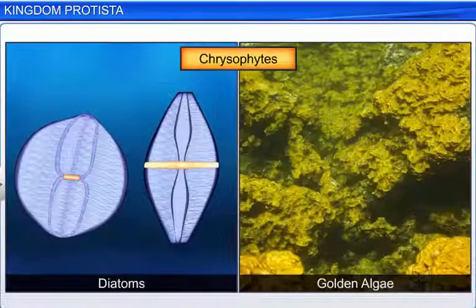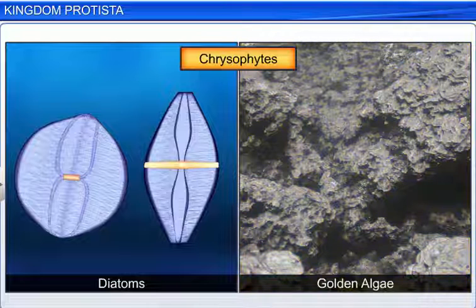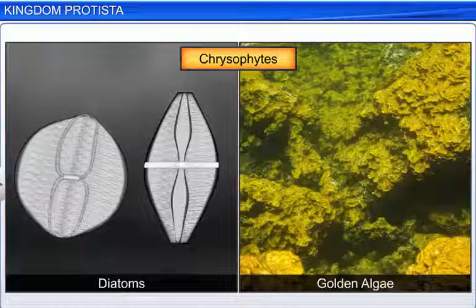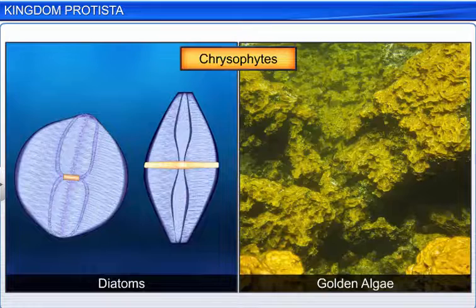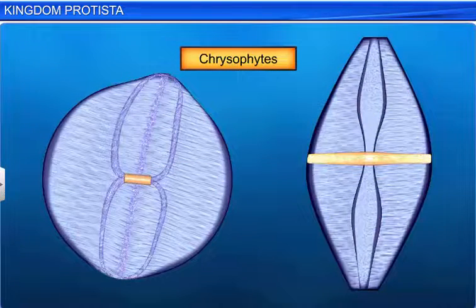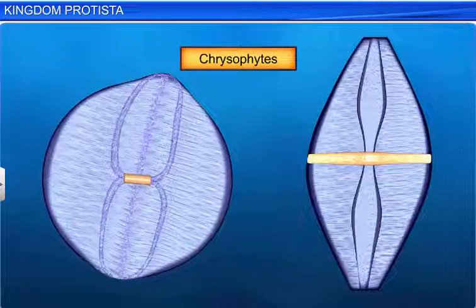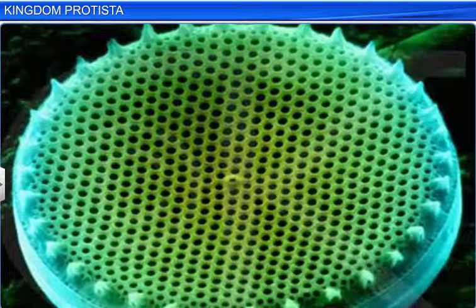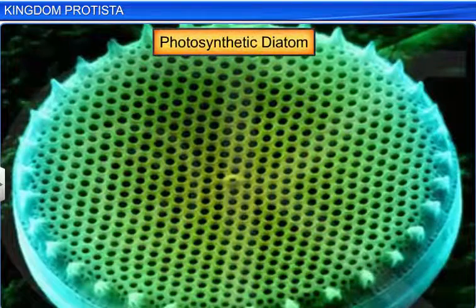Chrysophytes include Diatoms and Golden Algae, or Desmids. They are microscopic and float in great numbers in both fresh water and saline water. Also, they are mostly photosynthetic.